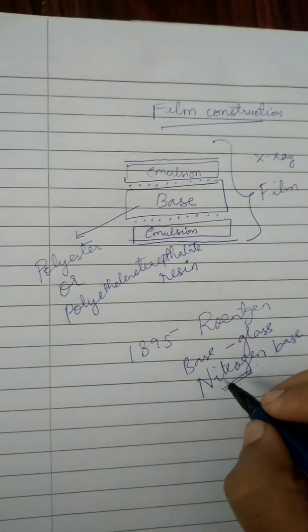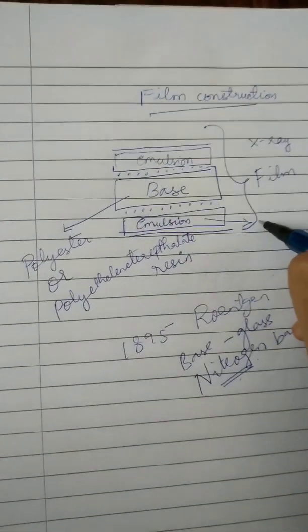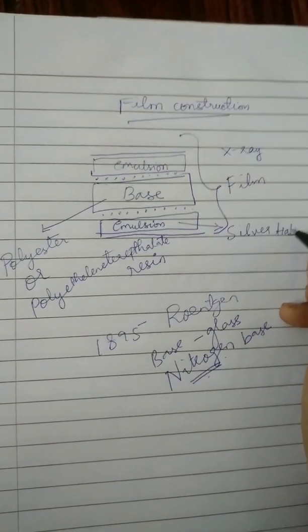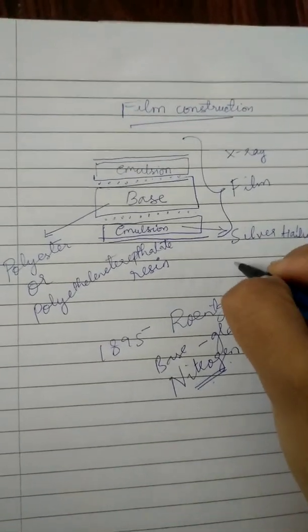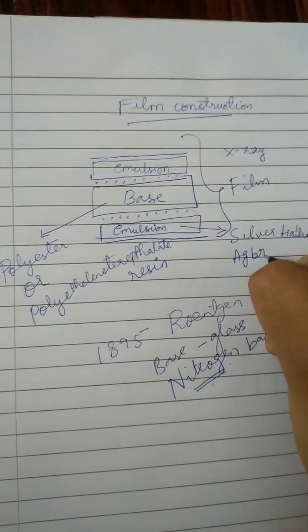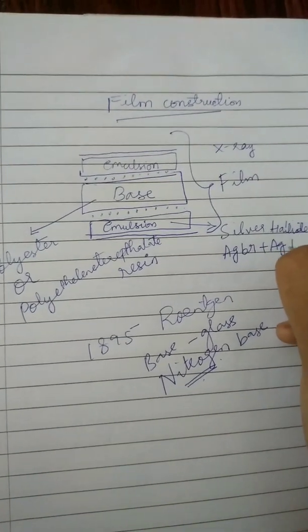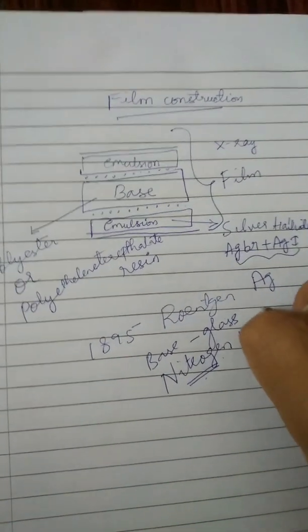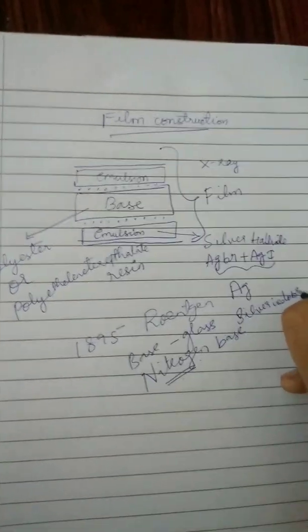So they have founded polyethylene phthalate resin as a base. And then emulsion layer consists of silver halide. Silver halide usually it will be bromine plus silver halide plus silver iodide. Together it is called silver iodo bromine.